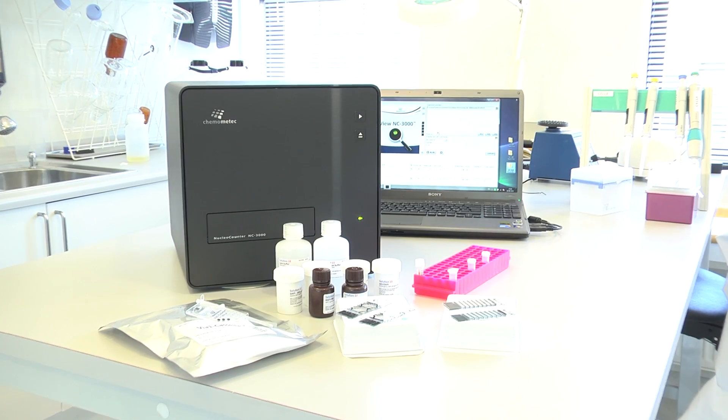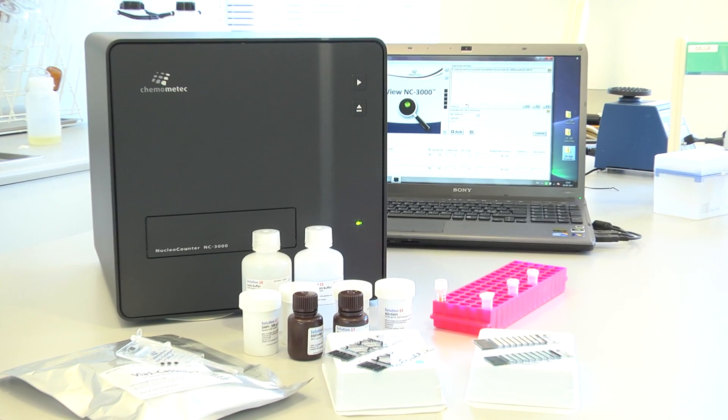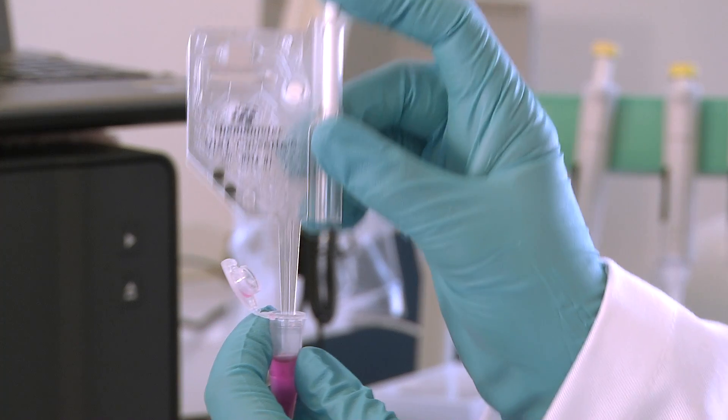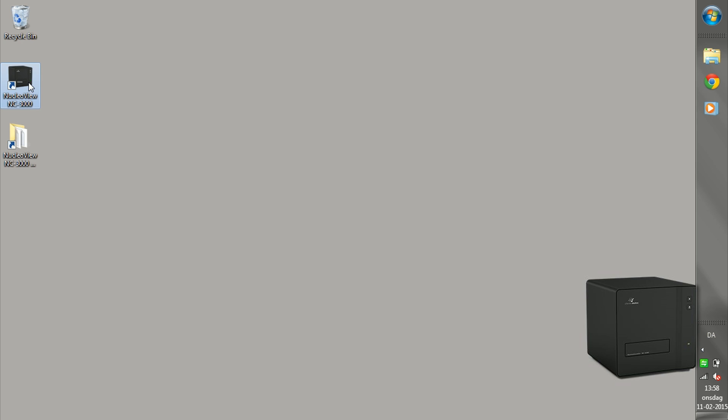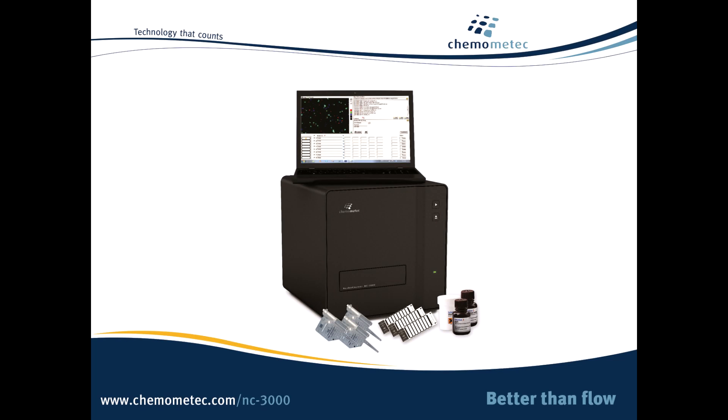If you need a powerful, flexible cytometer that offers high-speed, precise cell counting, predefined ready-to-use assays, custom assays and unlimited software licences, all with no maintenance and a footprint smaller than your centrifuge, look no further than the Nuclear Counter NC3000.